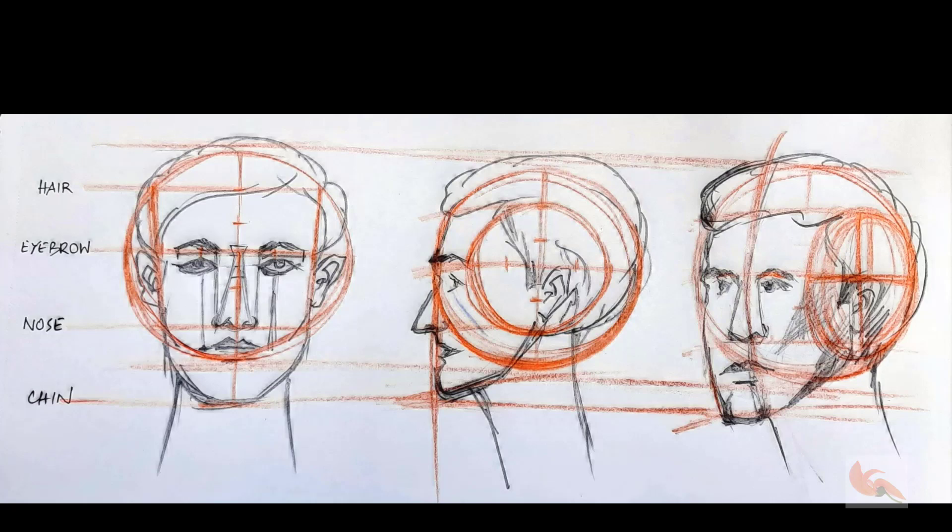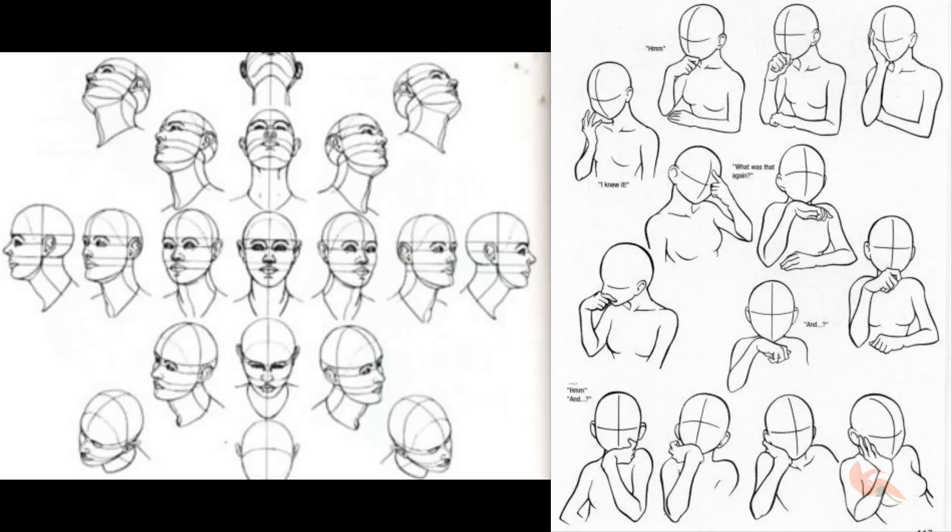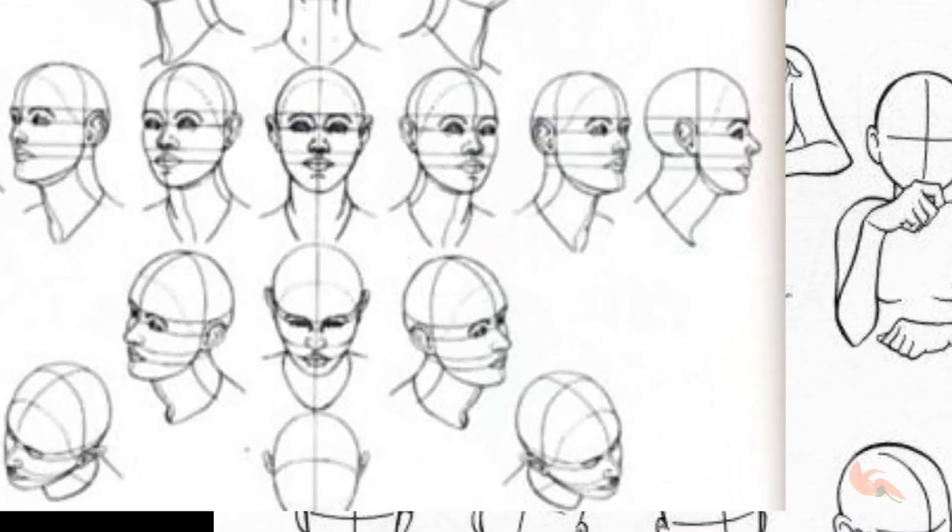Now we have seen the face at three different views but all looking straight. In case looking up or down the lines will change and the lengths will get foreshortened.